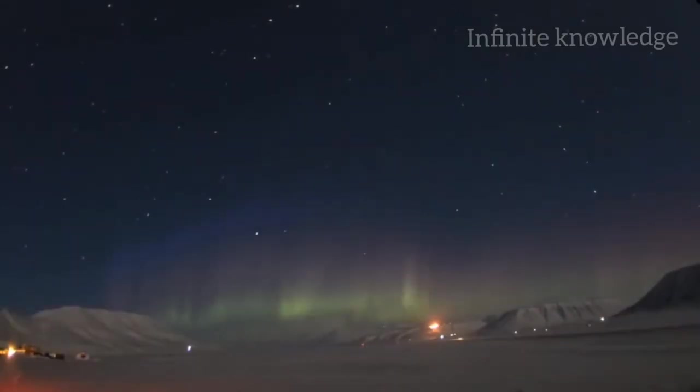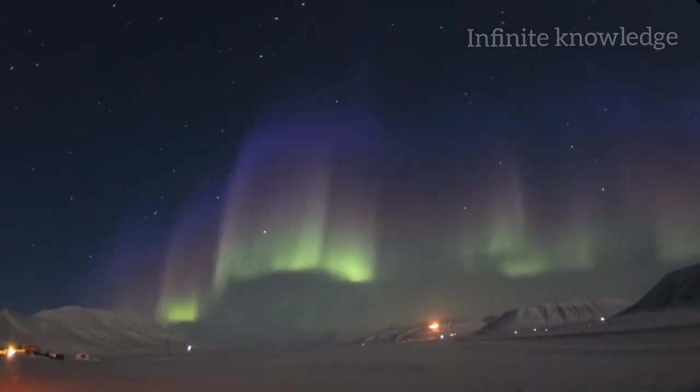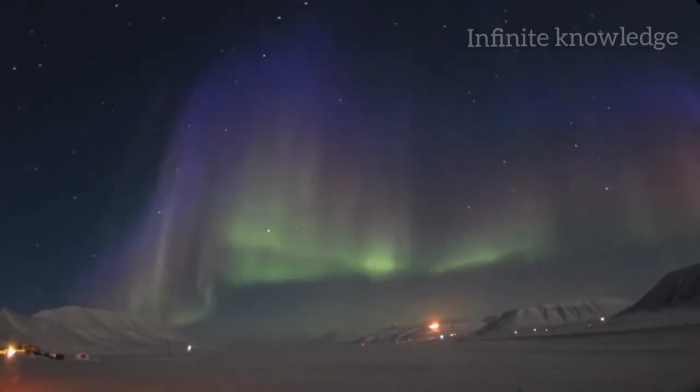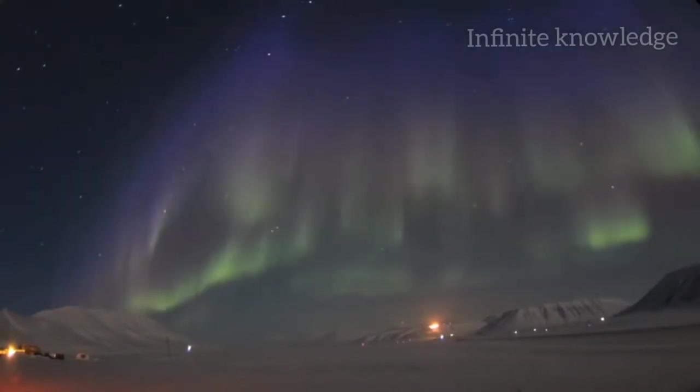When high-energy electrons strike nitrogen atoms, the atoms produce blue auroras at high altitudes, and sometimes magenta auroras at low altitudes.